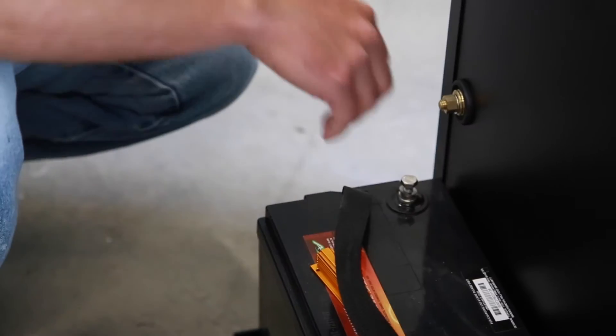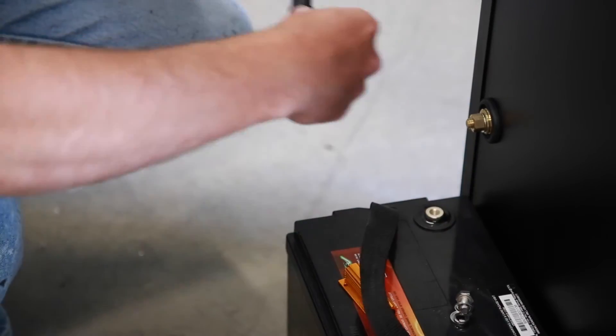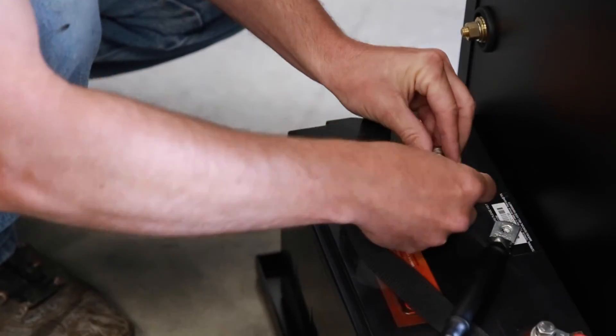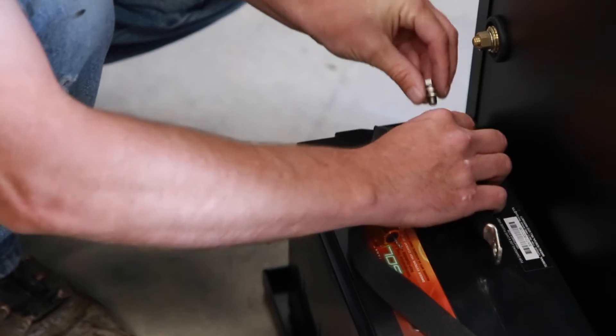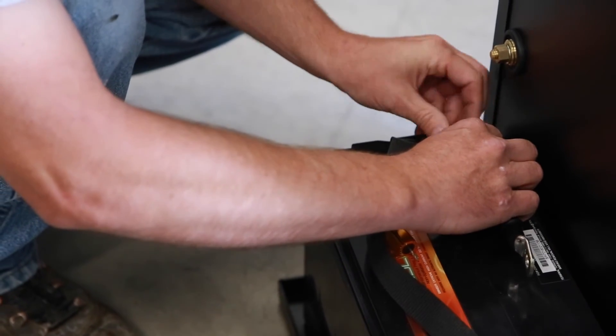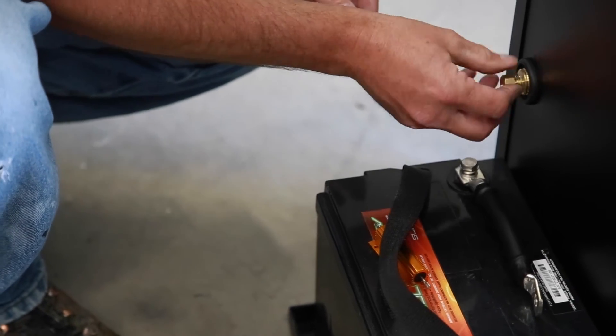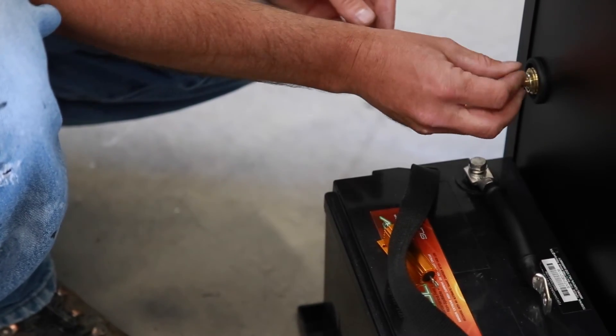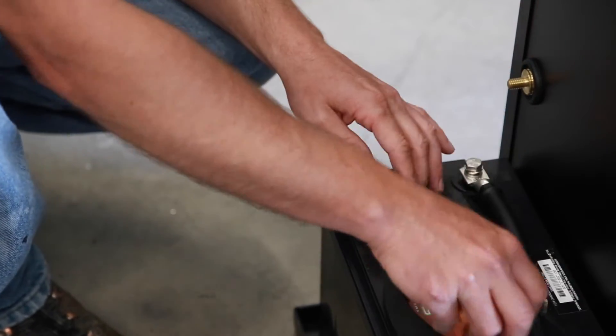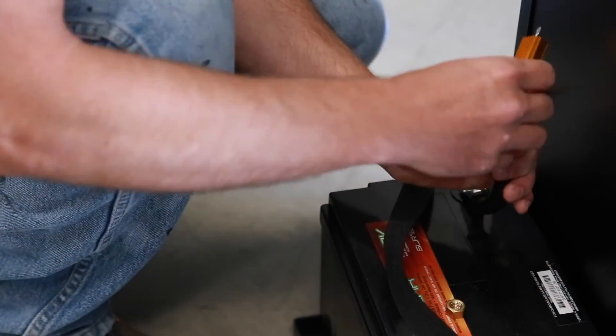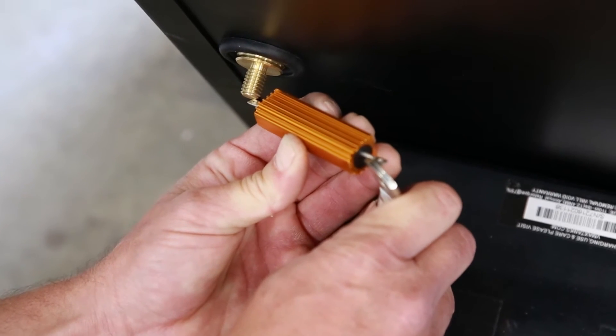On this last one you won't want to fully connect until you have used the resistor. So first you will connect the small hole to the battery. Then you will use the resistor included with the generator. All you have to do is touch it on here for a few seconds to energize the generator and that way you won't get a spark when you connect it.